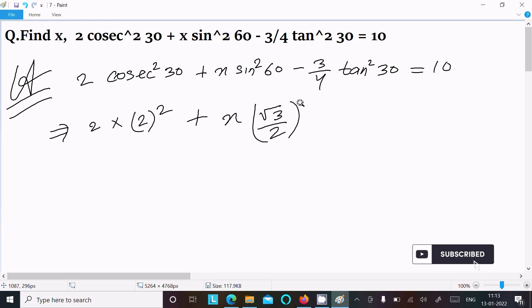And square is there, power 2. This we can write as 3/4, and tan 30 we know is 1/√3, and power 2 = 10.